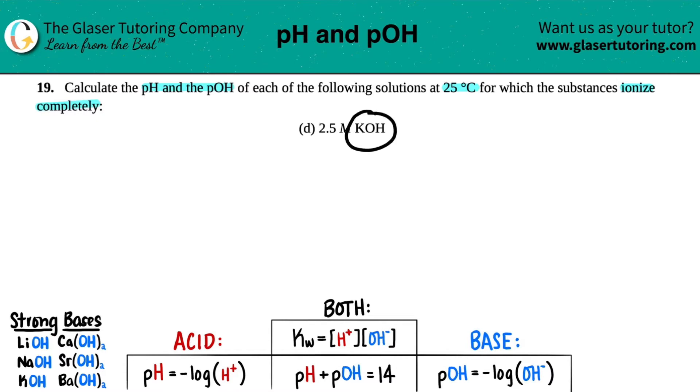So when you see KOH, like stars should be going off, bing, bing, bing, in your mind, because KOH is a strong base, Sb.